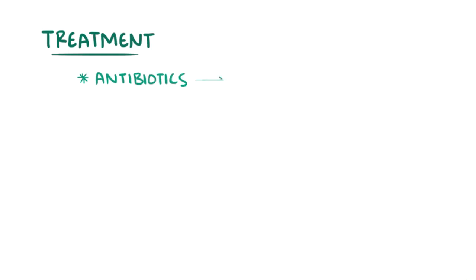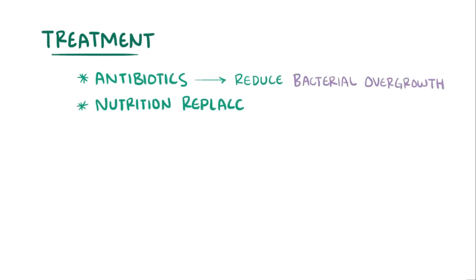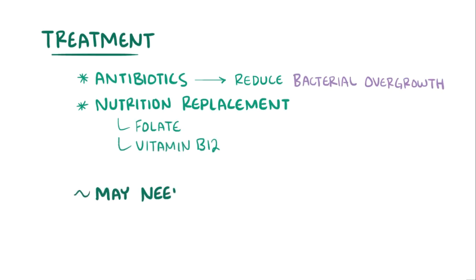Treatment for tropical sprue typically involves using antibiotics to reduce the bacterial overgrowth, and nutrition replacement to deal with specific deficiencies like folate and vitamin B12. Sometimes these treatments have to be given for up to a year because of the chronic nature of the problem.